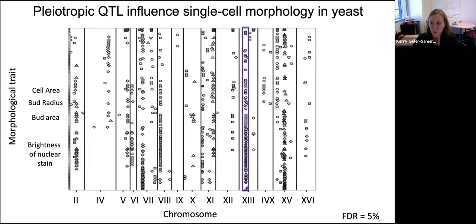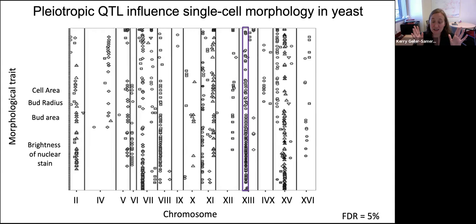QTL represent large regions of the genome, and it's possible that within a region there are multiple less-pleiotropic genes. But for at least one QTL I'm showing you, that's not the case — we narrowed its effect down to a single gene called HOF1 that affects 73 morphological features.